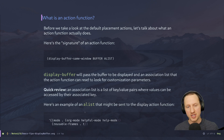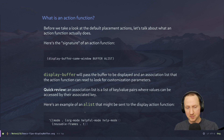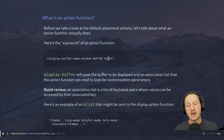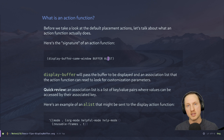Let's talk about what an action function is. The signature of an action function has the function name, then the first parameter is the buffer we're trying to place, and the second parameter is an association list with key-value pairs to customize the behavior of that function. When display-buffer calls one of these functions, it passes in the buffer and this association list — which may have been provided by the user or by Emacs itself — to customize the behavior of these action functions.